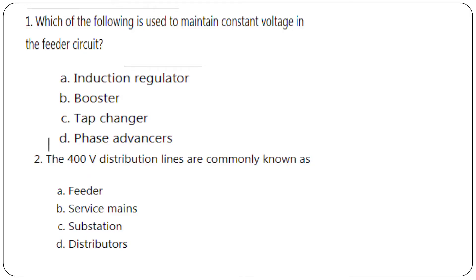Now let's go to the questions. First question: Which of the following is used to maintain constant voltage in the feeder circuit? The answer is option A, Induction regulator. The 400V distribution lines are commonly known as feeders, servicemen, substation, or distributors. The answer is option D, Distributors.